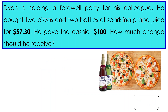Exercise 2. Dian is holding a farewell party for his colleague. He bought 2 pizzas and 2 bottles of sparkling grape juice for $57.30. He gave the cashier $100. How much change should he receive?